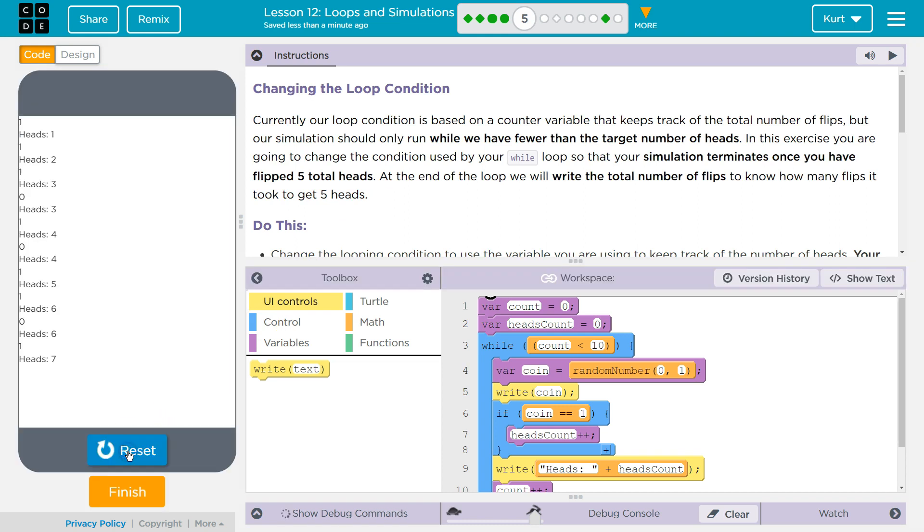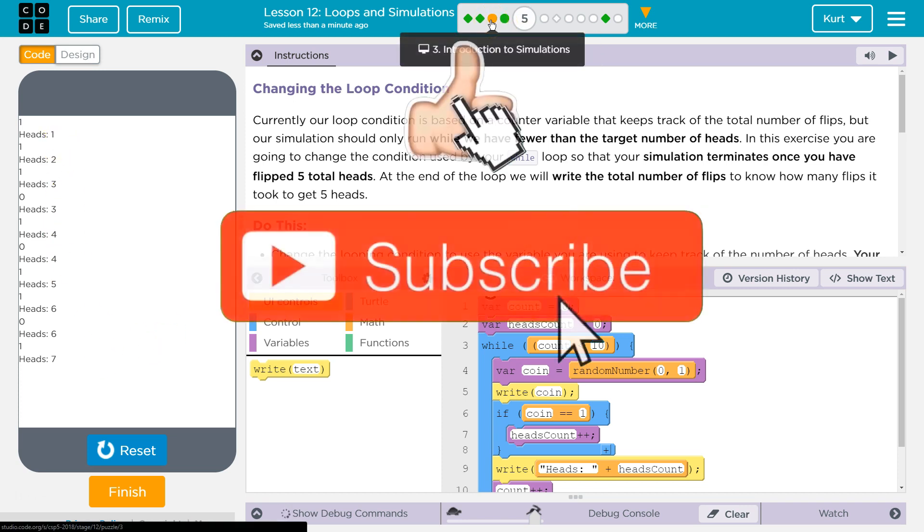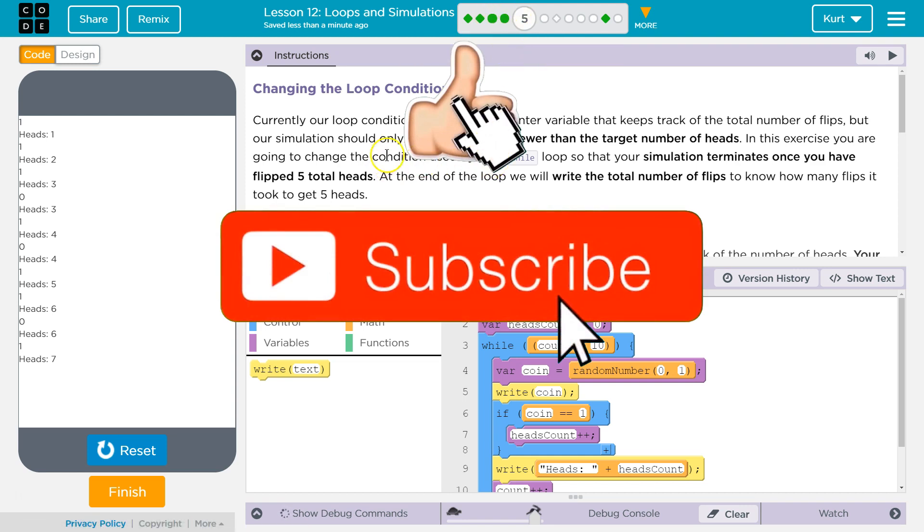So right now we have a working app. It's counting the number of times heads is flipped with a coin. It's 10 times. If you don't have this stuff, you need to go back and do 3 and 4. If you're stuck, watch my other videos.